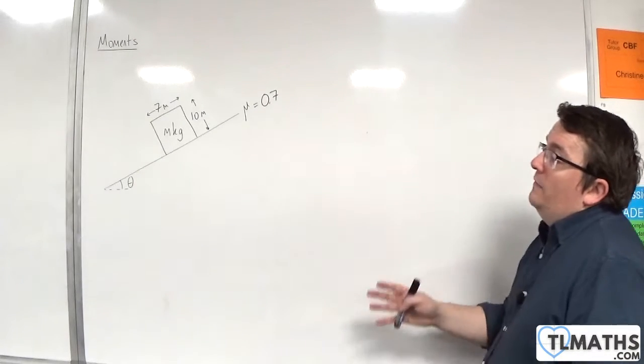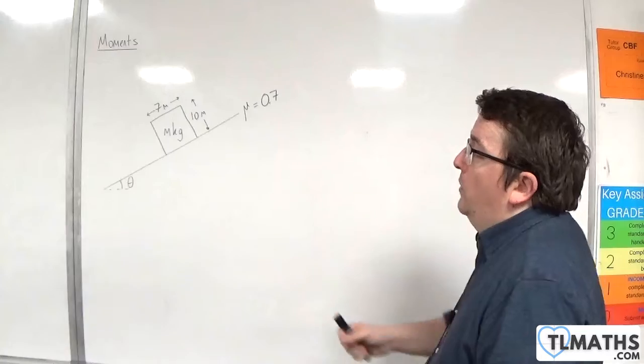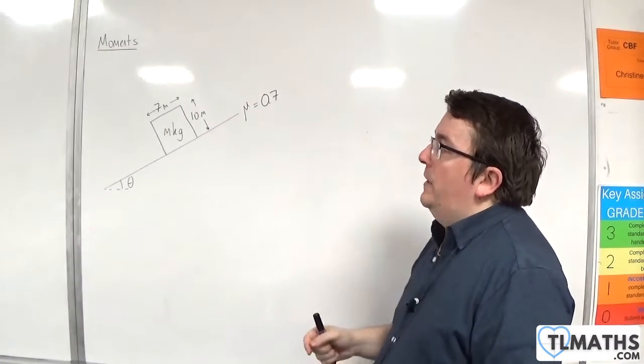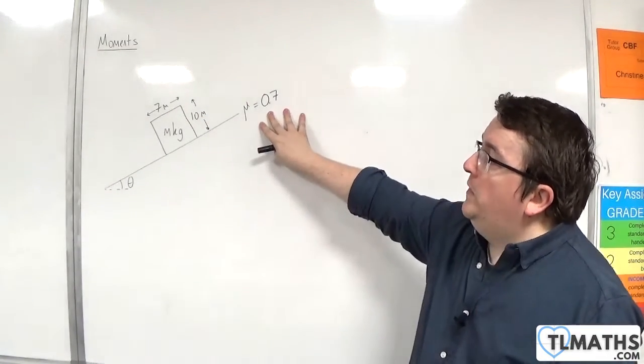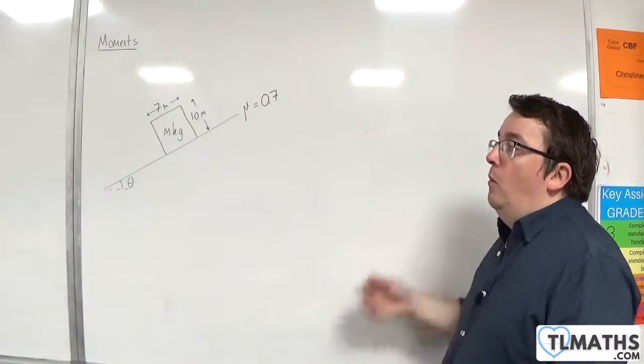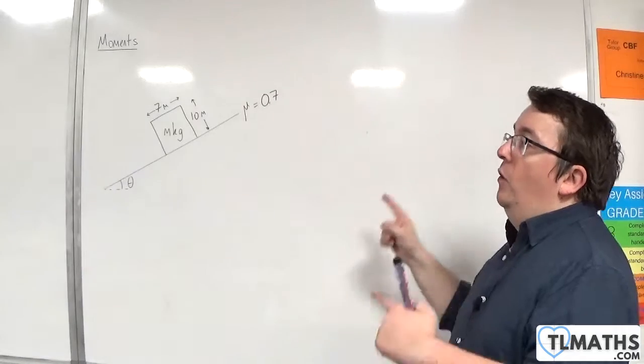So in this example, we have a block on an inclined plane with a mass of m kilos, a width of 7 metres and a height of 10 metres. The coefficient of friction between the block and the plane is 0.7. The angle theta is steadily increased. What will happen first? Will it slip or will it tip?